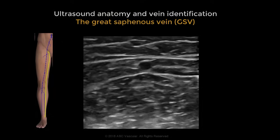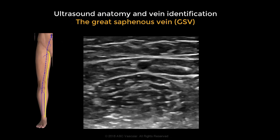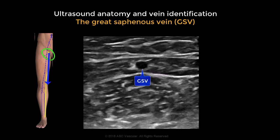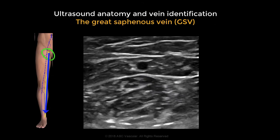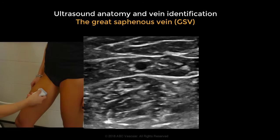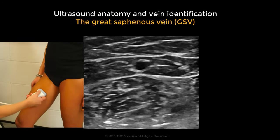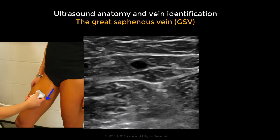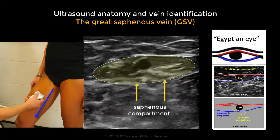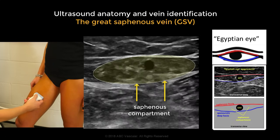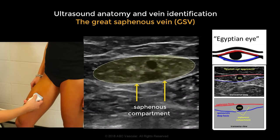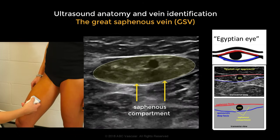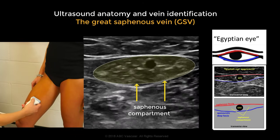The great saphenous vein continues from the groin down through the medial aspect of the thigh and calf. To identify it, use a transverse view and move the transducer all the way down through the territory of the great saphenous vein in the thigh and in the calf. The great saphenous vein presents with a typical appearance in which the saphenous compartment mimics the Egyptian eye.